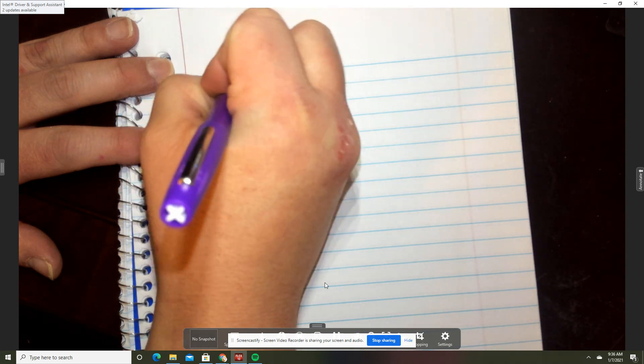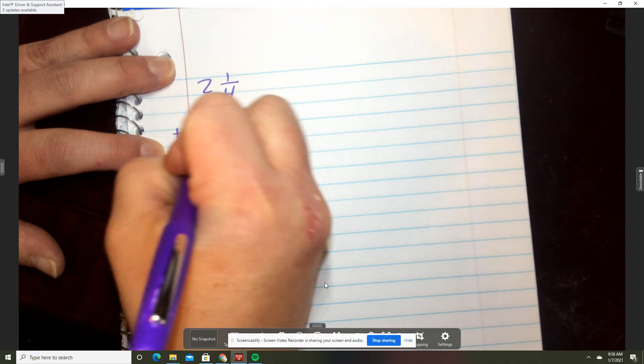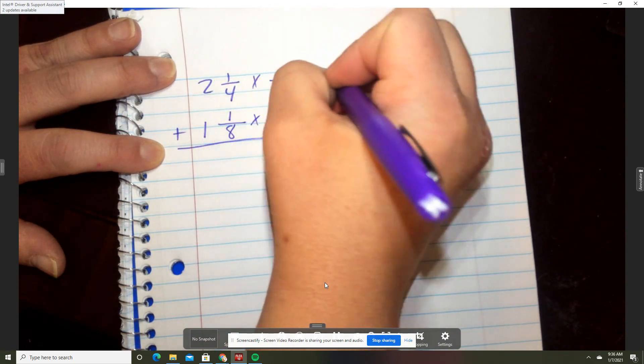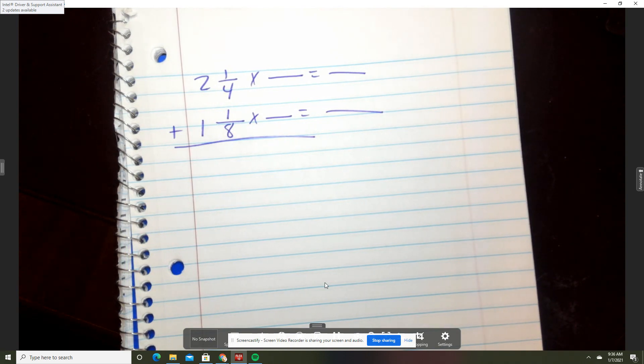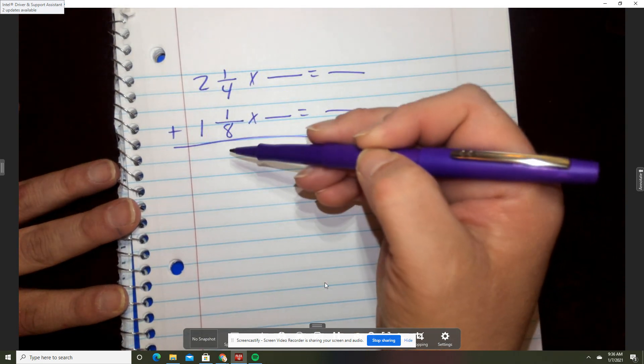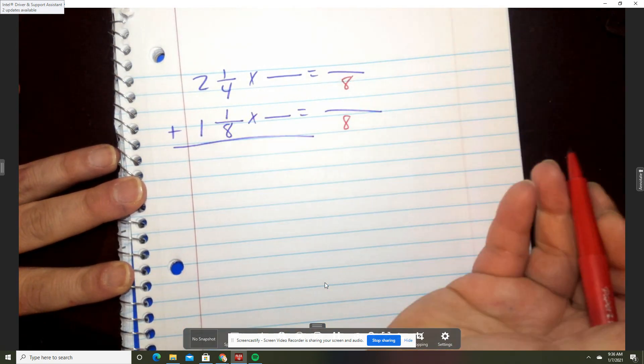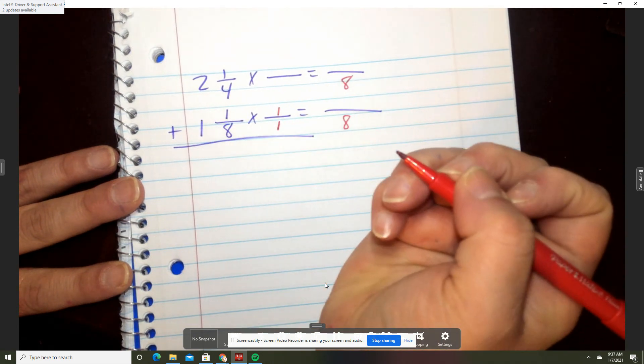So we'll say 2 and 1/4 plus 1 and 1/8. Okay, so looking at this problem, you say, okay, well, can four go into eight? Yes, four can go into eight. So that's what you're going to want to use as your denominator without having to make the M. Eight goes into eight one time. What you do to the bottom, you do to the top. Four goes into eight two times. What you do to the bottom, you do to the top.